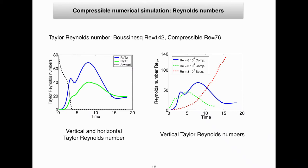Comparing the Reynolds number evolution between the compressible and Boussinesq cases: in the Boussinesq case, the Reynolds number grows as t³. For the two compressible simulations at Reynolds numbers 3×10⁴ and 6×10⁴, we see two bumps in the Taylor-Reynolds number evolution. The first bump corresponds to the evolution of the large-scale Atwood number, and the second corresponds to acoustic waves — the instability creates a strong system of acoustic waves which also produce turbulence.